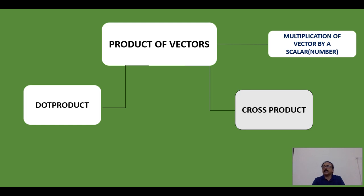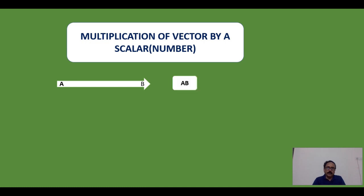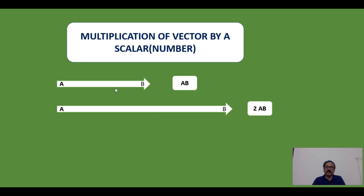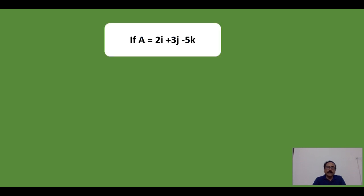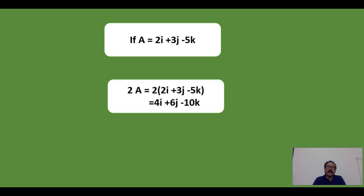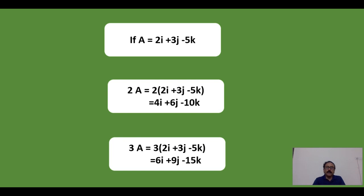Let's first talk about the multiplication of vectors by a scalar number. If you take a vector AB and multiply it by 2, you get twice of it — 2AB. Similarly, multiplying by 3 gives 3AB. If A is equal to 2I plus 3J minus 5K, then twice A is 2 times (2I plus 3J minus 5K), which gives 4I plus 6J minus 10K. Similarly, if you multiply vector A by 3, each coefficient is tripled, giving 6I plus 9J minus 15K.